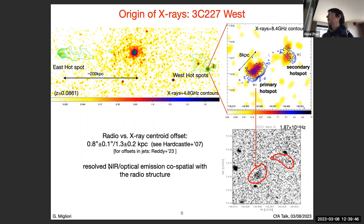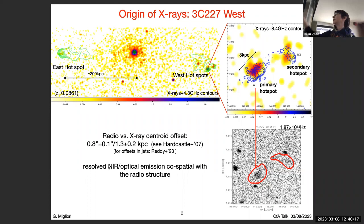This offset was already reported by a previous study and is of the order of one kiloparsec in projected size, so it could be even larger. Our VLT observations revealed the optical emission shown here. The image is a bit noisy, however the emission is significantly detected and seems to resemble the structure seen also in X-ray and radio — a sort of double arc-shape structure.